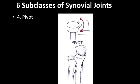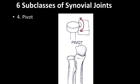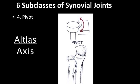A pivot joint exists between the head of the radius and a notch on the ulna near the elbow joint — the head of the radius can pivot on its axis. Another pivot joint exists between the first cervical vertebra, the atlas, and the second cervical vertebra, the axis, where the atlas pivots on top of the axis.